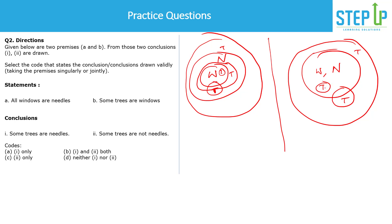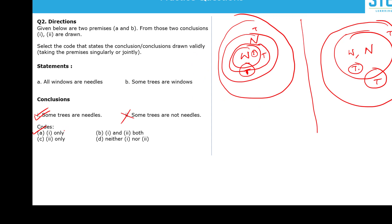Can we conclude 'some trees are needles'? Checking all possible cases — in each arrangement of trees, windows, and needles — some trees are always needles. Since it is valid in all possible cases, it is a correct conclusion. Can we say 'some trees are not needles'? In the case where trees equal windows and windows equal needles, all trees are needles, so this is false. Therefore, only statement one follows.